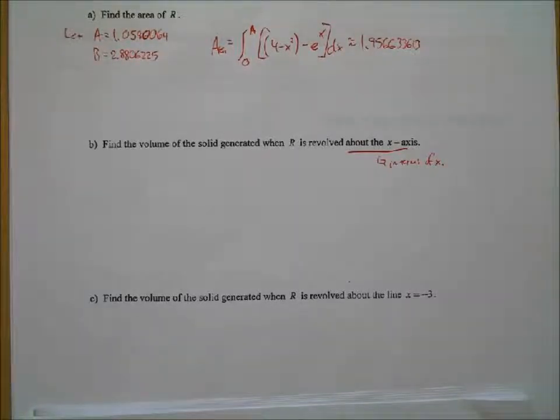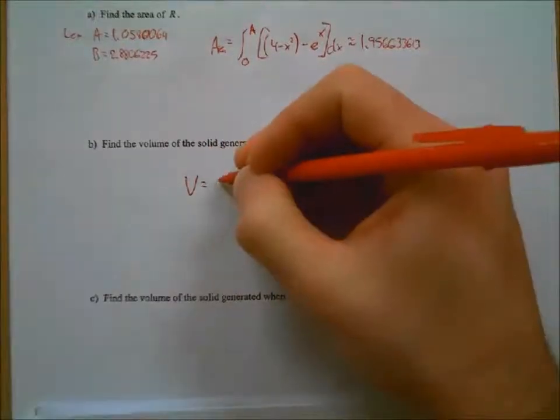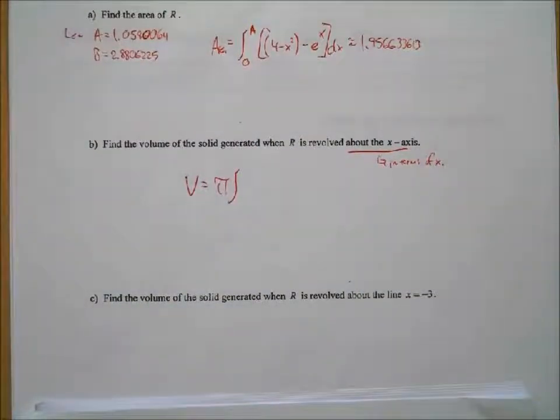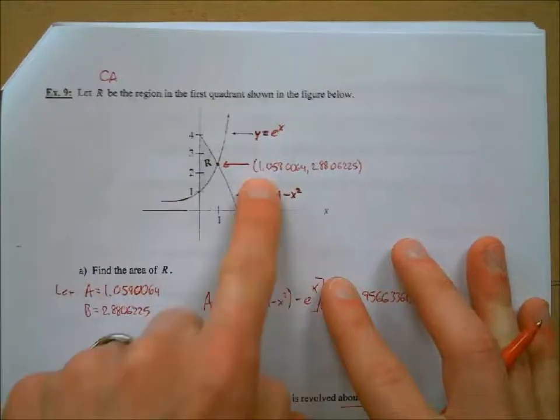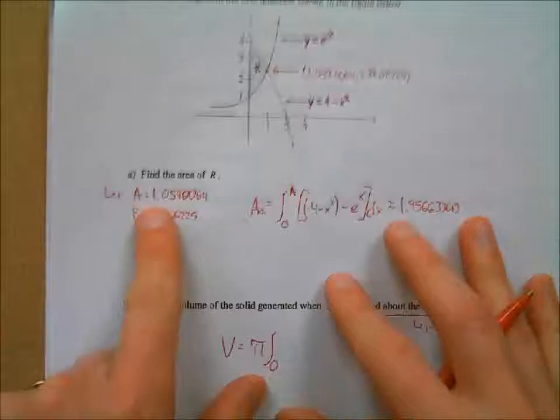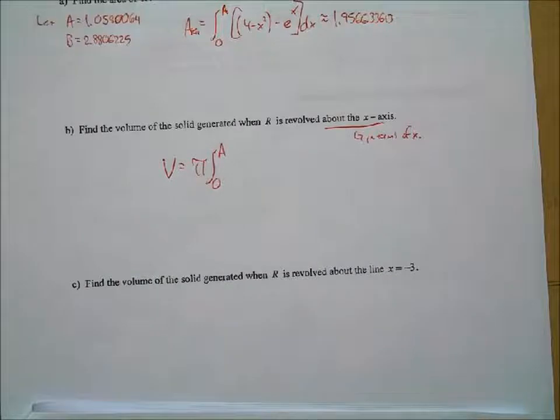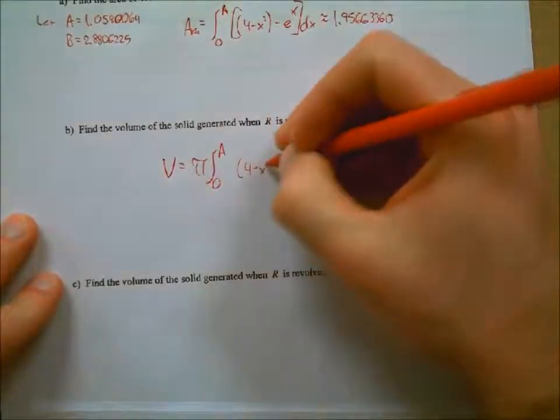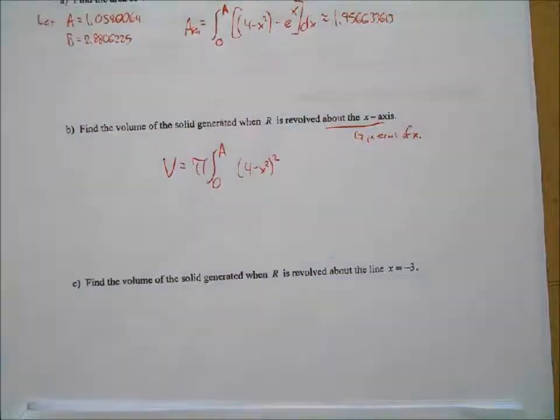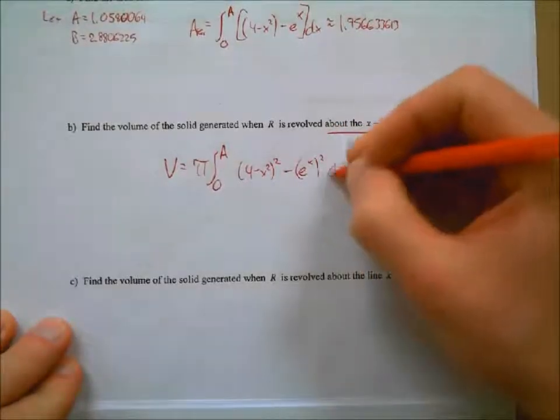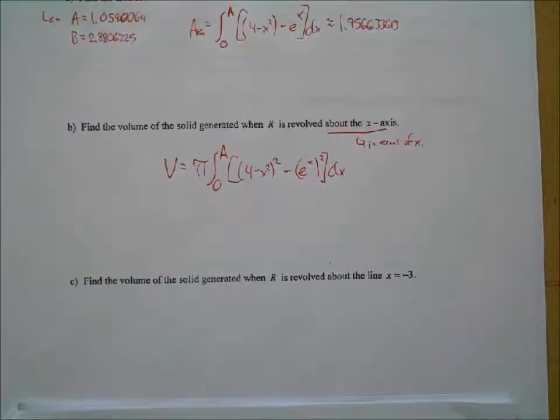Okay. Great. First of all, I just want to stop right there. Yes. Pi times the integral. Go ahead. Zero to, oh, it's not one. It looks like it's one. But this value is actually 1.0580064. So we're going to use that value, which I remember said earlier was a. So we're just going to say from 0 to a there. But go ahead. Now, what's your integrand? 4 minus x squared, that quantity squared. Okay, so that's our big radius you're saying. Minus e to the x squared. And then dx. Yeah. Very good.